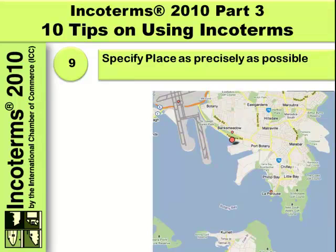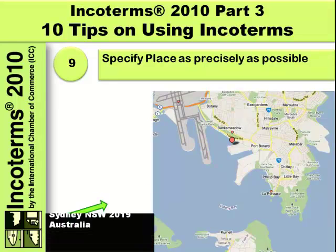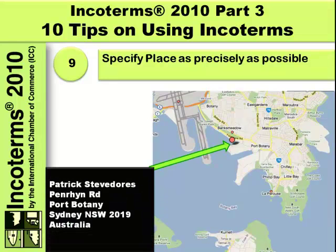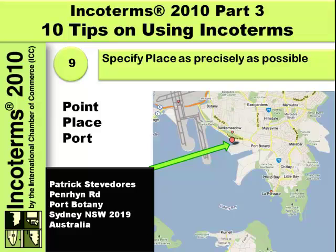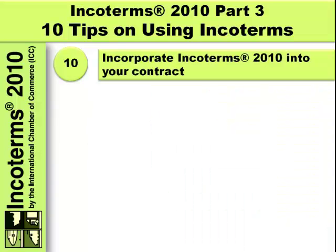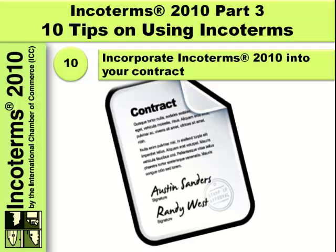Tip number nine: specify the place as precisely as possible where the delivery is to occur. Have precise details of the point, the place, and the port — being very specific helps avoid ambiguity.